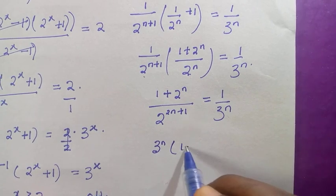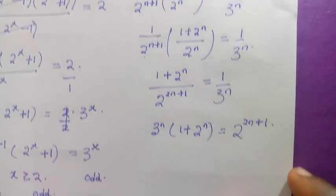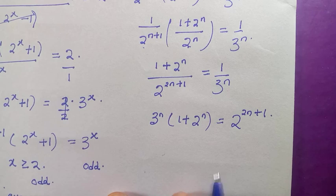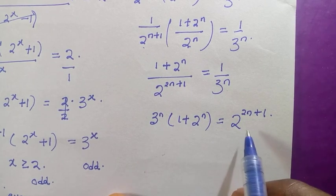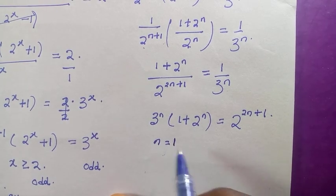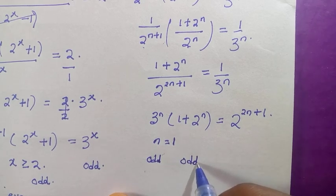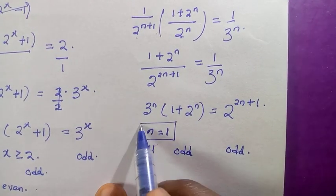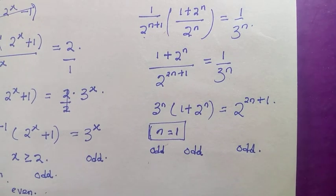Testing with n equals 1 to check both sides, they will be equal at n equals 1, meaning x equals negative 1 also satisfies. However, generalizing by parity arguments, only specific values satisfy this. In conclusion, x equals 1 is the integer value that satisfies the problem. Thanks for watching, and don't forget to subscribe to this channel — never stop learning!